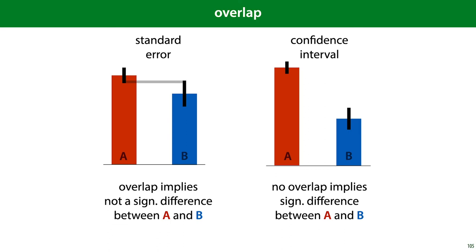In the case of the standard error, under certain assumptions, overlapping error bars imply that there is not a statistically significant difference between A and B. So if the standard error error bars overlap, we may not conclude, in this case, that A is better than B. Or at least, such a conclusion is not statistically significant.